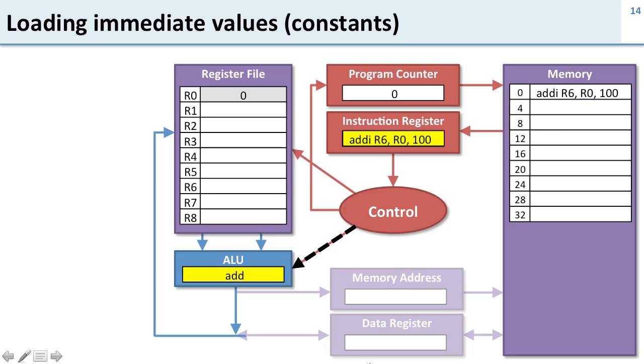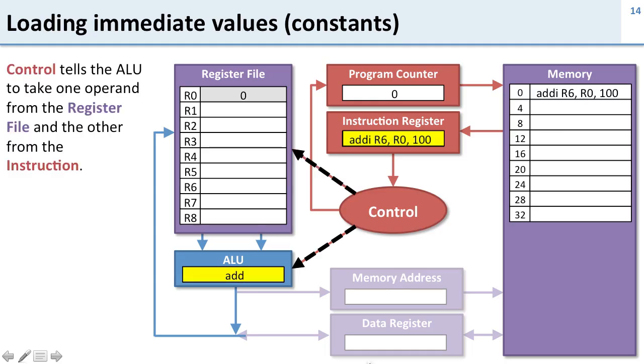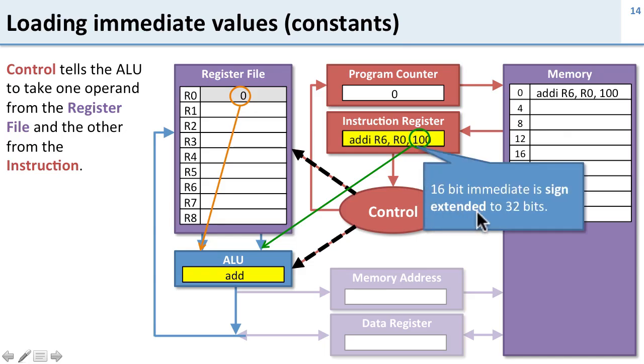Our control is going to tell our ALU to do an add. It's going to tell the register file that it's going to load from register 0, and we're going to take the other value directly from the instruction, 100. But because this is a 16-bit value encoded in our instruction, we're going to have to go and sign extend it to 32 bits. So sign extend it to 32 bits, do our add, and then we can store the result into our register file.